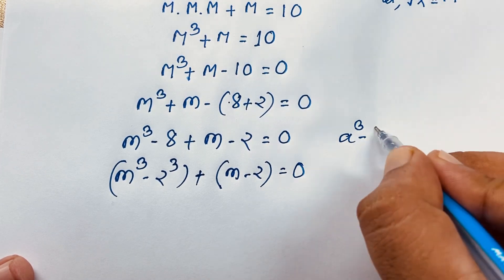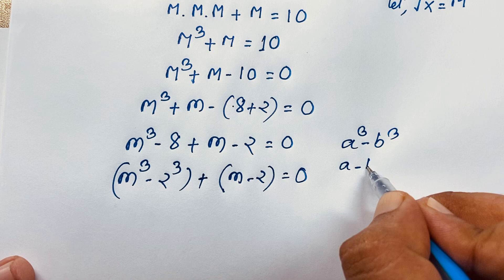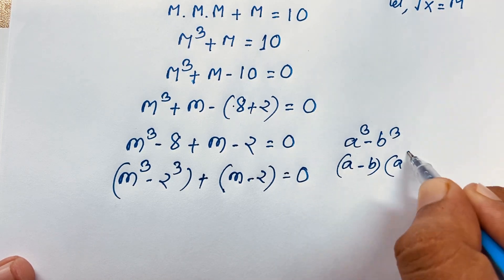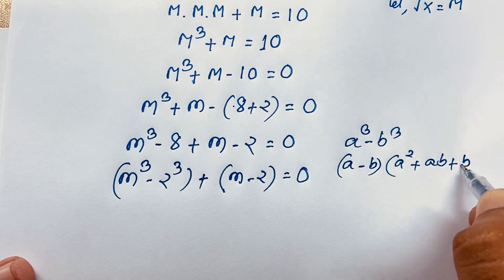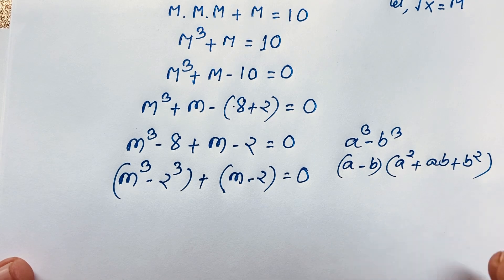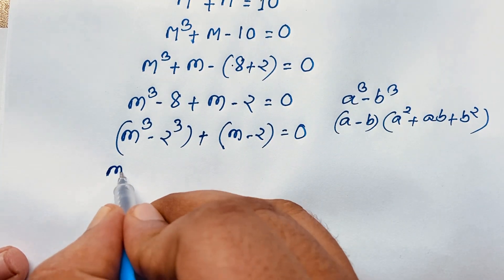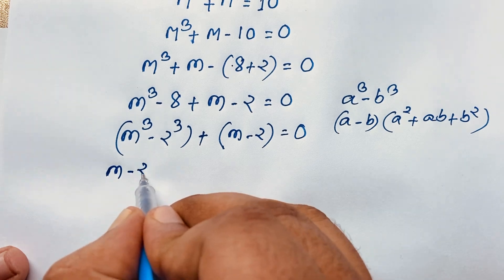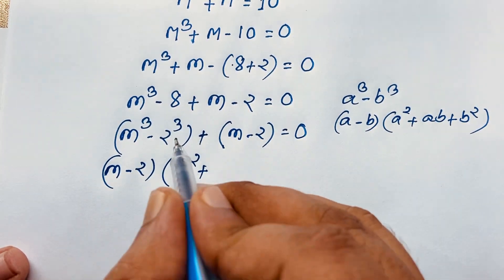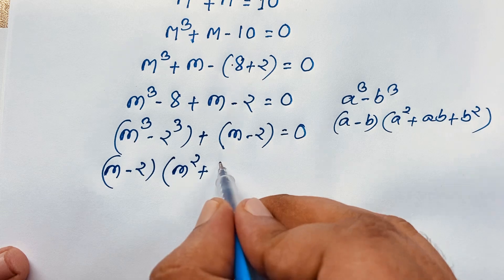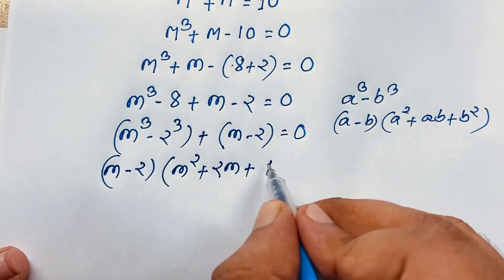Note that a³ minus b³ equals (a minus b)(a² + ab + b²). Applying this formula here, m³ minus 8 becomes (m minus 2)(m² + 2m + 4). Plus the remaining term (m minus 2), all equal to 0.